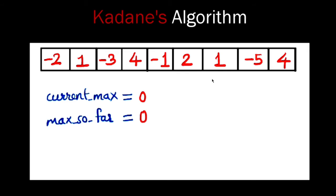For example, in this array we have the elements: minus 2, 1, minus 3, 4, minus 1, 2, 1, minus 5, and 4. If we take the subarray minus 2, 1, minus 3, we get the sum as minus 4. And if we take the subarray 2 and 1, we get the sum as 3. So we have to find which subarray has the maximum sum — it can be the whole array or just one item.